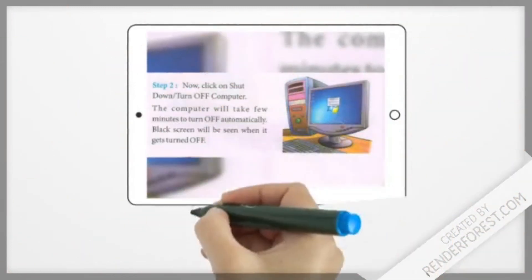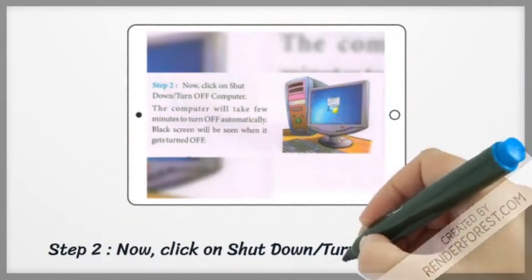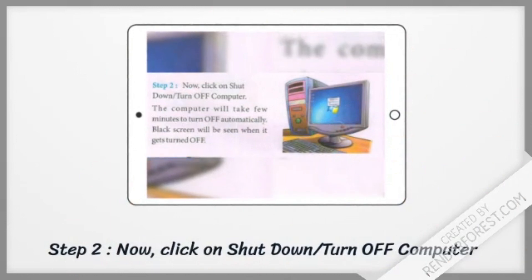Step 2: Now, click on Shutdown or Turn Off Computer. The computer will take a few minutes to turn off automatically. Black screen will be seen when it gets turned off.